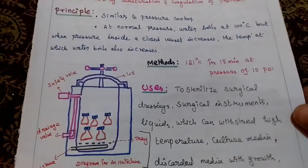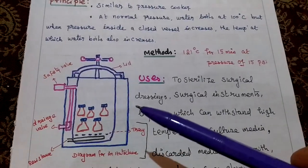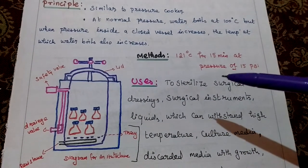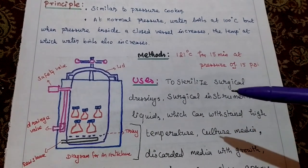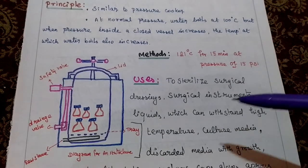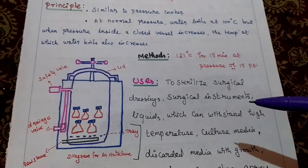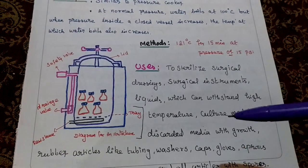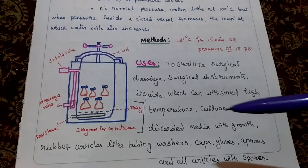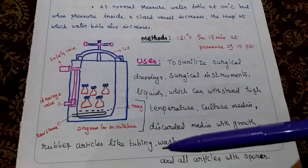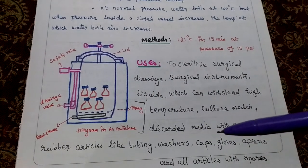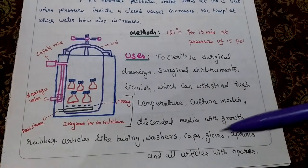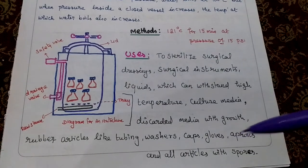This is a diagrammatic representation of the autoclave. Its uses include sterilization of surgical dressings, surgical instruments, liquids which can withstand high temperature, culture media, and discarded media with growth. Rubber articles such as tubing, washers, caps, gloves, and aprons are also sterilized, as well as all articles containing spores.